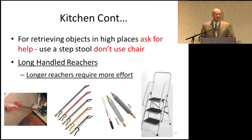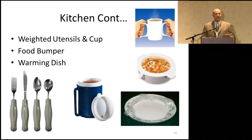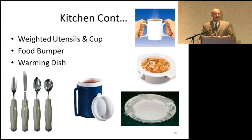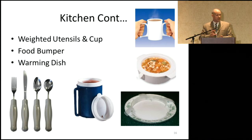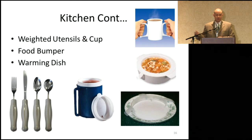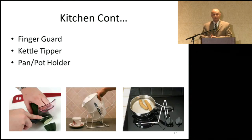Other kitchen options include weighted pens or weighted sleeves to help with tremor when writing checks or notes. There are weighted utensils and cups to help with tremors, a food bumper to help scoop food off a plate without it going over the side, insulated thermos cups that keep beverages warm and have a lid to prevent spills, and a heated soup dish to keep food warm as you eat — particularly useful if you eat a little more slowly, allowing you to enjoy a nice warm meal.